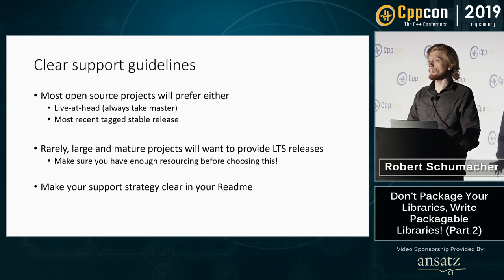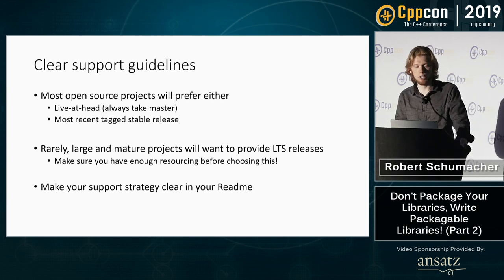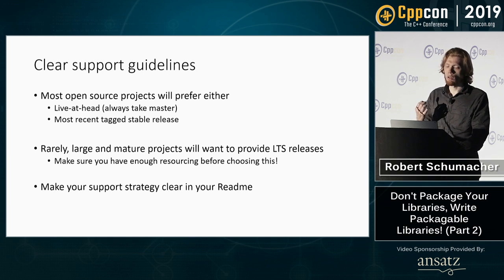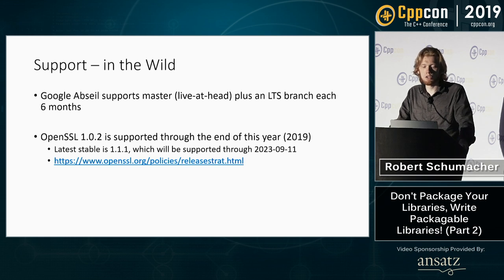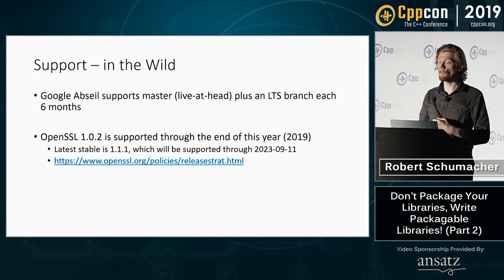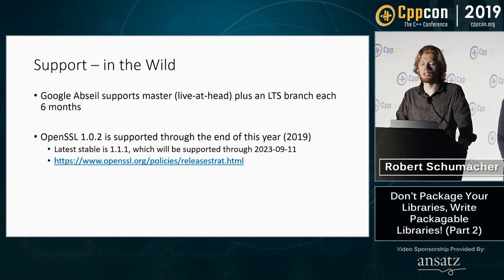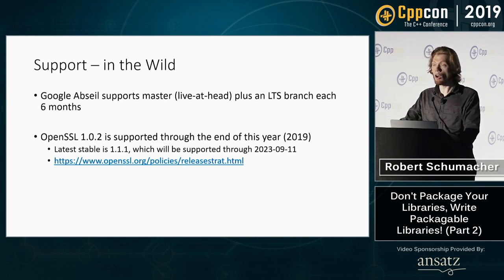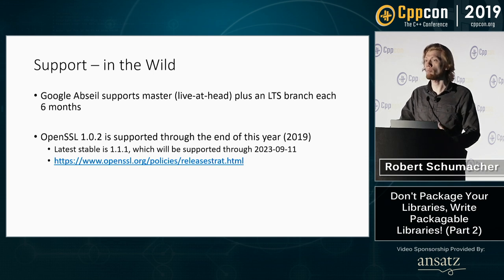Rarely, larger projects might want to provide LTS releases, but this can be incredibly expensive, so I strongly recommend you really think about whether it's right for your particular project. Whatever support strategy you take, make sure it is clear. OpenSSL has a webpage release strategy which goes into excruciating detail about exactly what is supported, what is not supported, what they intend to do with their version strategy moving forward, and dates associated with all of the above. If you're interested in providing strong, mature support for your library over time, read this document. Also note: OpenSSL 1.0.2 is dropping out of security support at the end of this year, so if your systems depend on OpenSSL, make sure you're using 1.1 or prepared to migrate very soon.